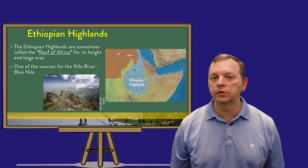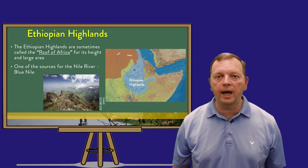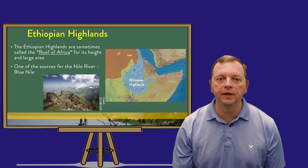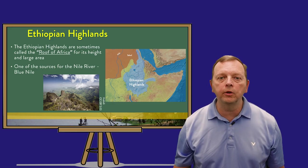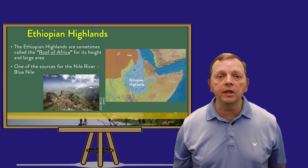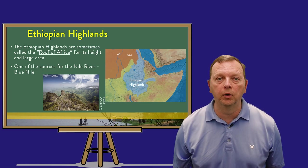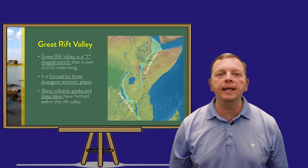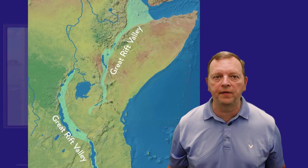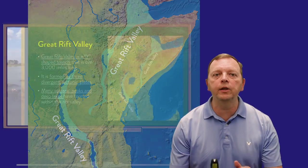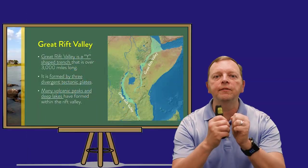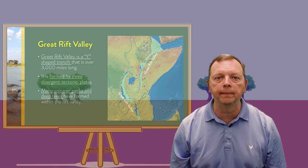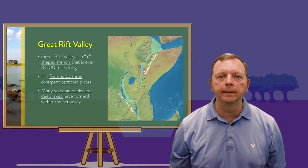One of the sources of the Nile is the Ethiopian highlands that feeds into the Blue Nile. These mountains are over 14,000 feet and are known as the Roof of Africa. Running right through the Ethiopian highlands is something known as the Great Rift Valley. A Rift Valley is created whenever you have tectonic plates that are diverging. As the plates pull away from each other, the land in the middle may drop down, creating a valley.